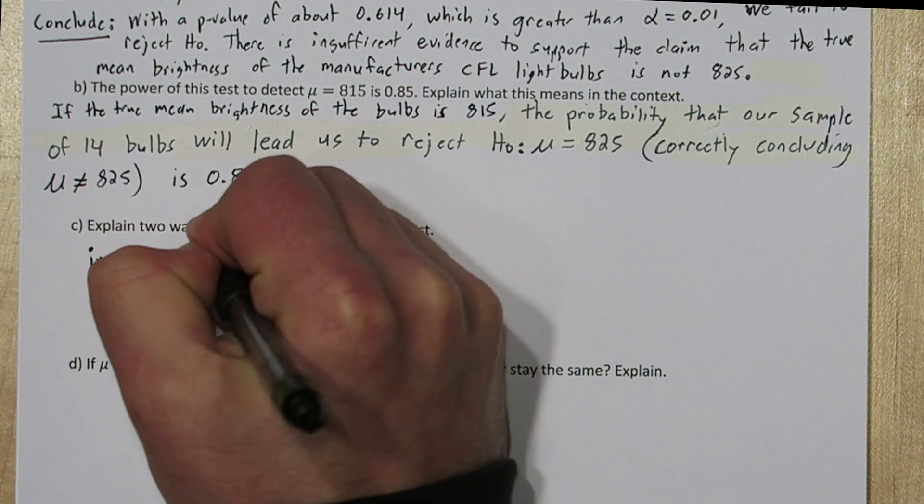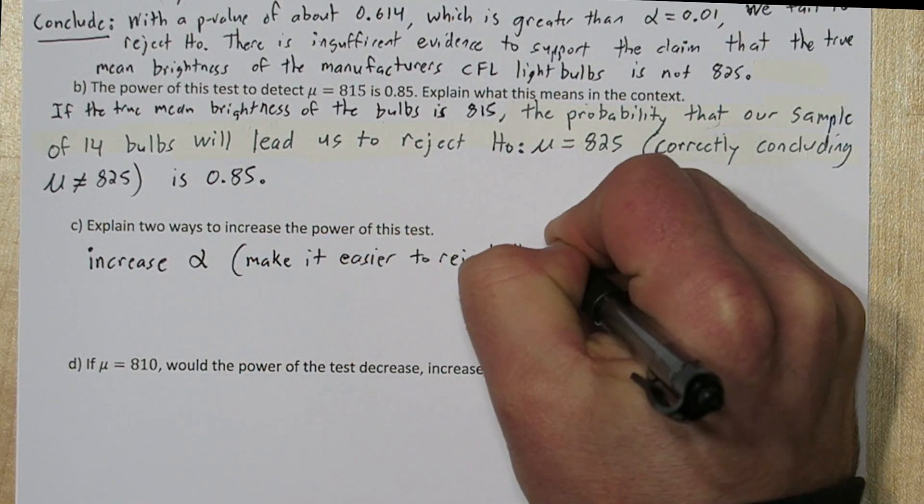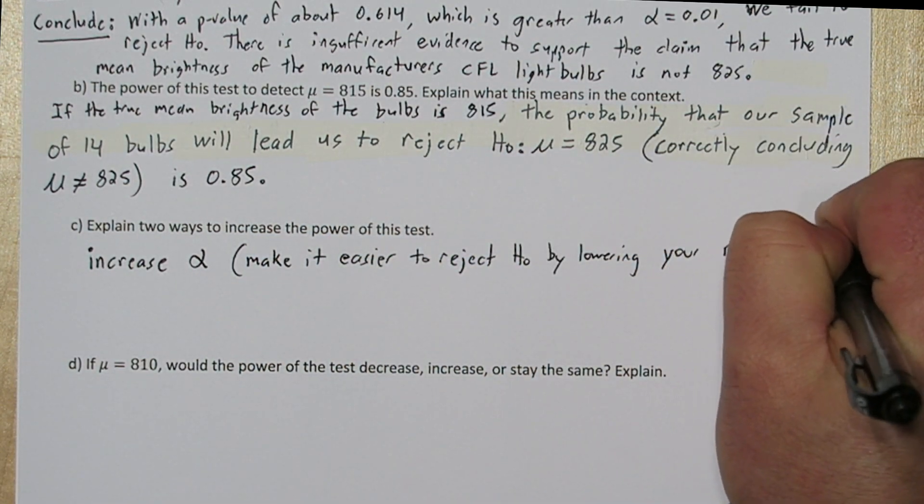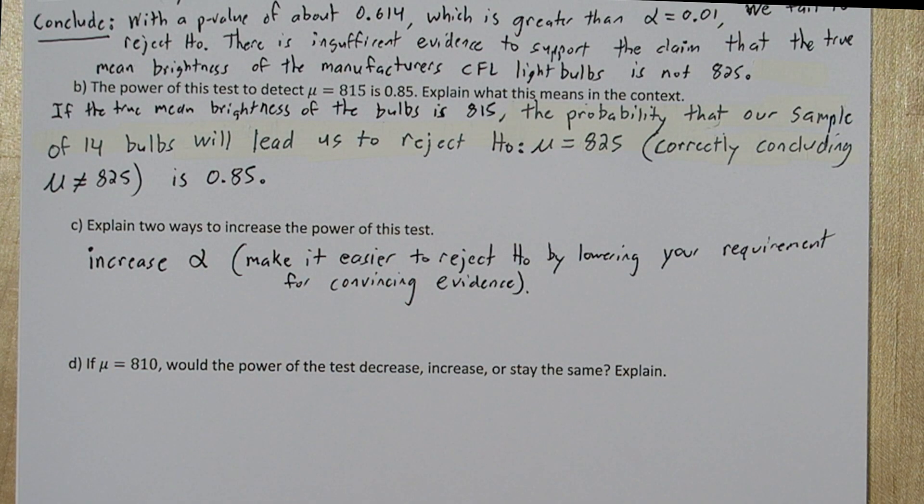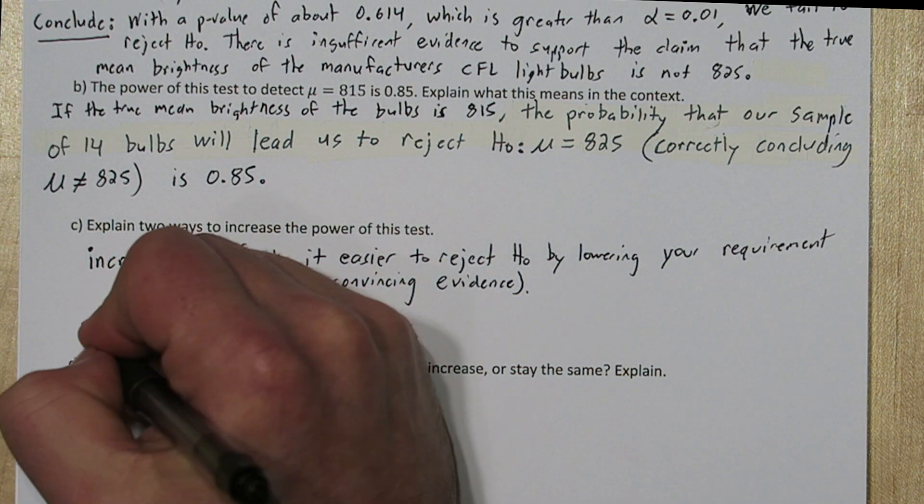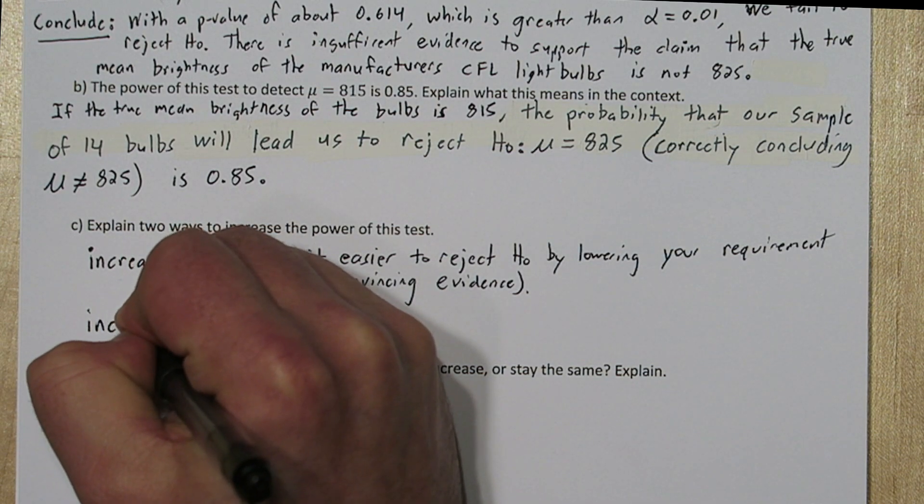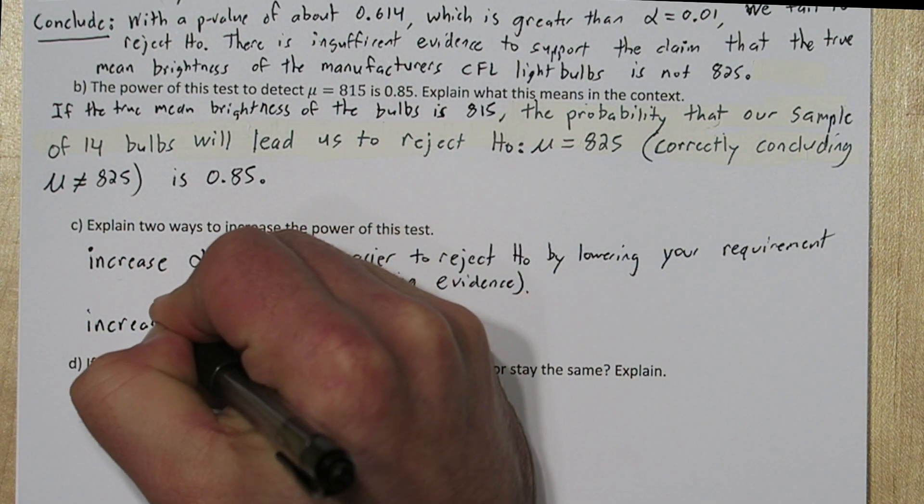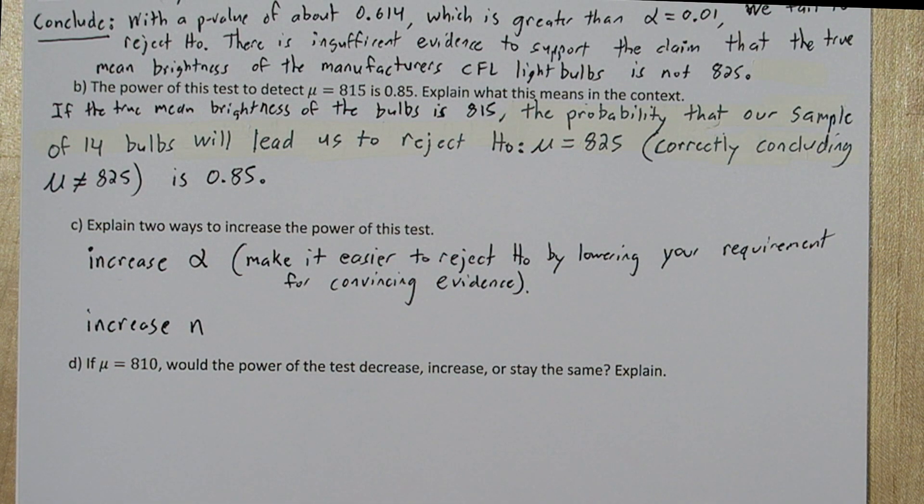Now there's two main ways you could increase the power of your test. The first is to increase alpha. This isn't a good idea usually. It makes it easier to reject the null hypothesis by lowering your requirement for convincing evidence. So you're simply lowering the bar on what it will take to convince you the null hypothesis is not correct. The second is to increase your sample size. This will decrease the standard deviation of the sampling distribution and allow you to make conclusions with smaller differences between your sample data and the null hypothesis. This is an ethical way to increase power, but it typically costs more money to take larger samples.